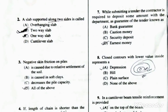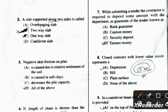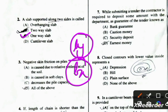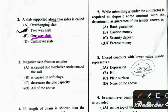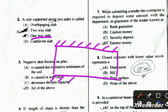Moving to the next question: a slab supported along two sides is called a one way slab. By definition, if the ratio of the longer span (Ly) to shorter span (Lx) is equal to or greater than two, it is a one way slab. A one way slab is supported on two opposite parallel edges, while a two way slab is supported on all four edges. Since this slab is supported along two sides, one way slab is the correct answer.